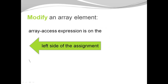If you want to modify an array element, you place the array access expression on the left side of the assignment. For example, to modify the third element and assign it the new value 22, you write myArray[2] on the left side of the assignment, with the new value 22 on the right side.